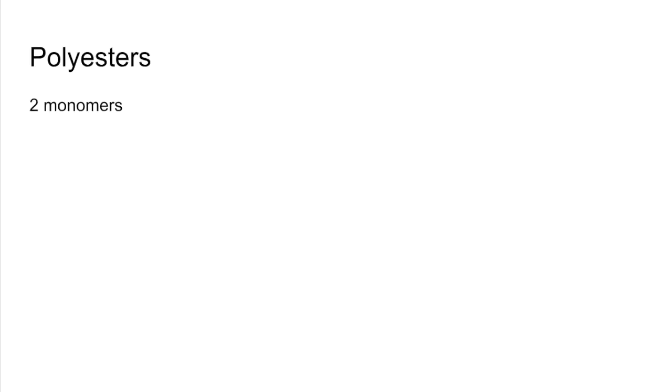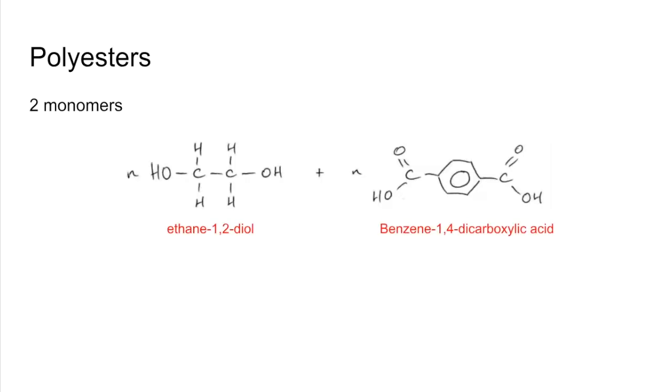We'll start with polyesters made from two monomers. The monomers I'm using for this example are ethane-1,2-diol and benzene-1,4-dicarboxylic acid. Those little ends there represent we've got a large number of those molecules. Remember we need to make a water molecule when these join together. So I'm going to take the OH from the carboxylic acid group and the H from the alcohol group. Do that to both of them. Then we join together what's left when the water molecule comes out.